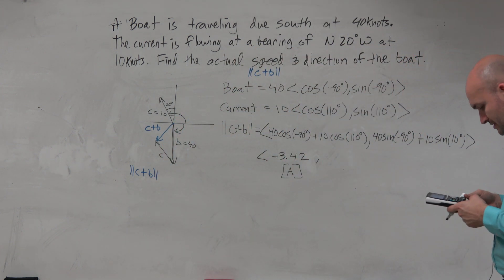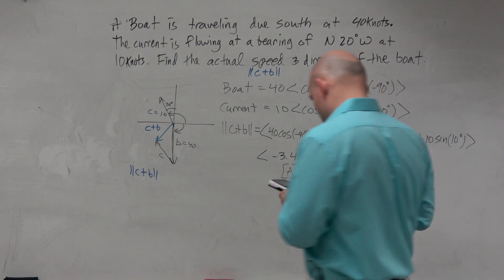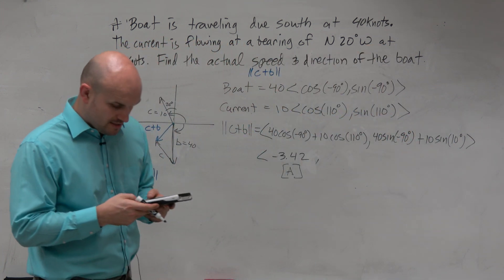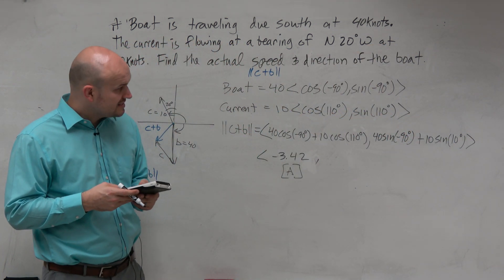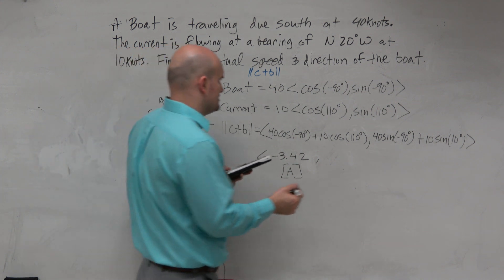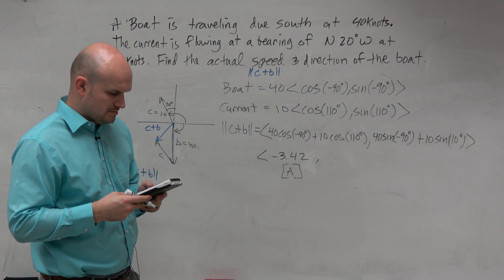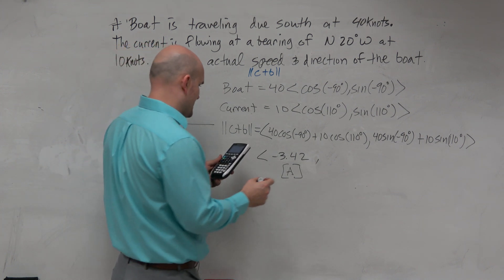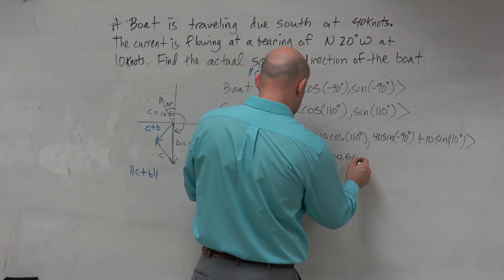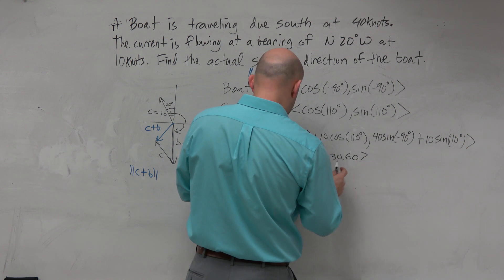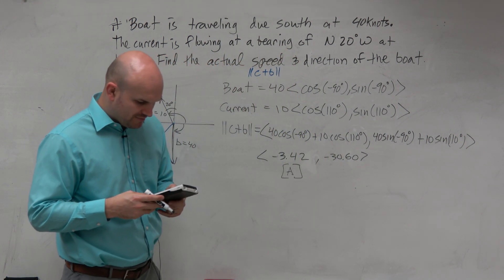And then I do this one, which would be 40 times the sine of negative 90 plus the 10 times the sine of 110. And that gives me a negative 30.60. And I'm going to store that as alpha B.